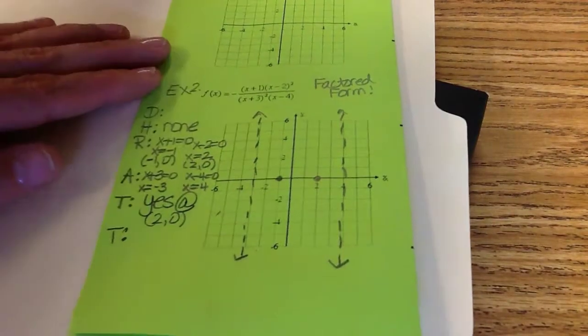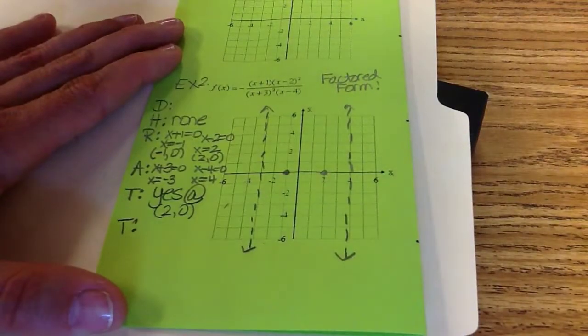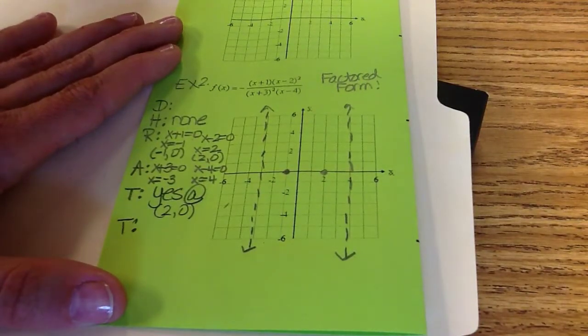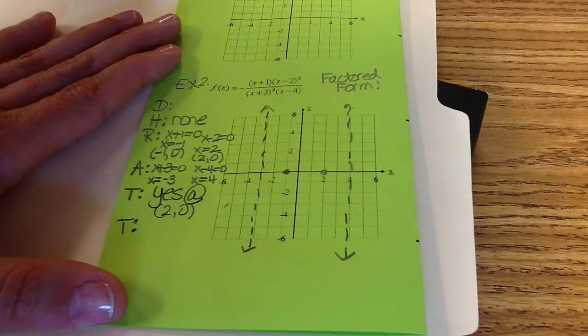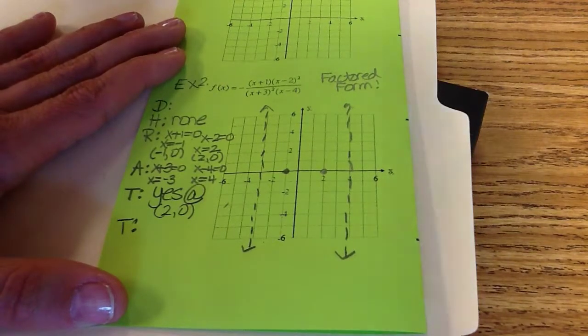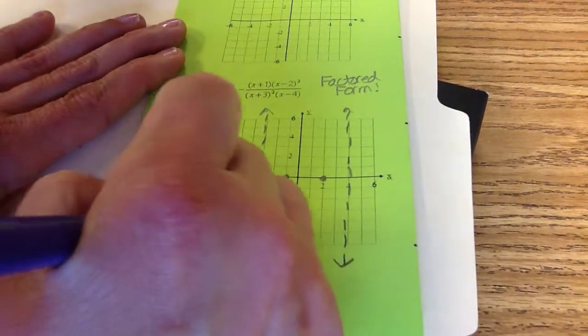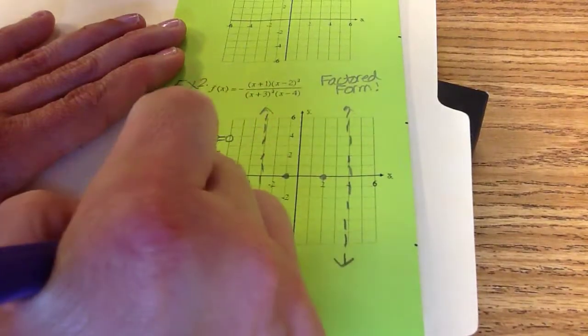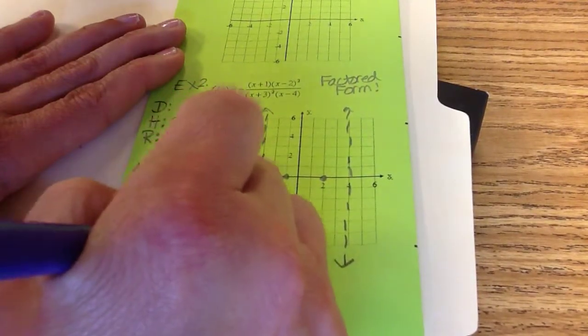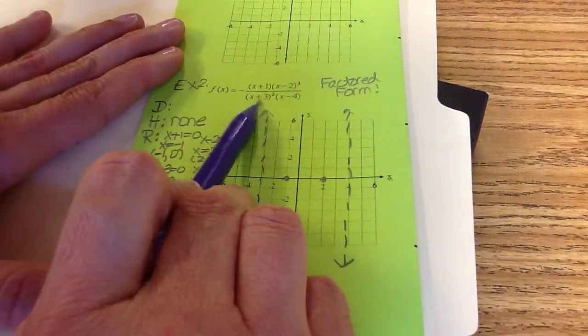So togetherness is the same idea, but it's in the denominator. So look in the denominator. Are there any of those asymptotes that have a multiplicity that's even? And the answer there is yes. So there's togetherness at x equals negative three because of that even exponent.